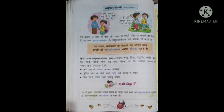In vaakyon mein 'yaa' aur 'aur' shabd do shabdon aur do vaakyon ko mila rahe hain. Ye Samuchya Bodhak shabd hain. Ise Yojak bhi kaha jaata hai — this joins two words or other words.